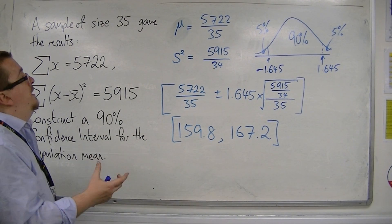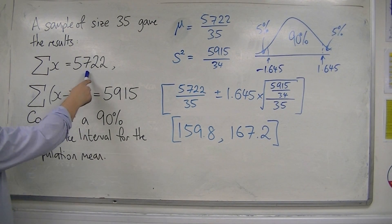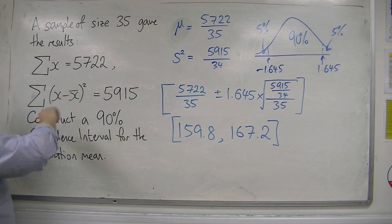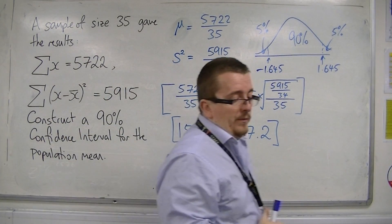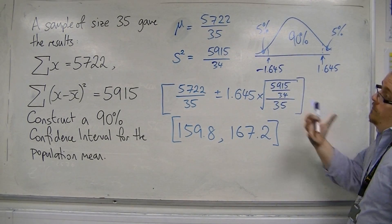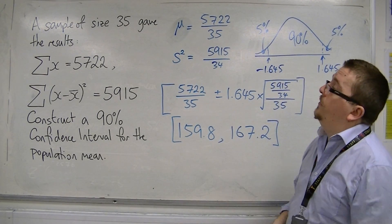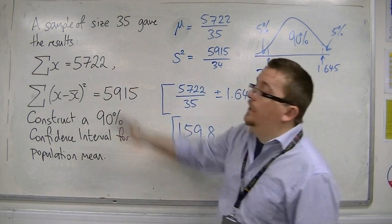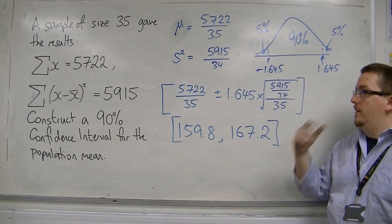Here we've used the sample mean and an unbiased estimator for the variance. The reason we were able to do this was because the sample size was 30 or more — in this case, 35.